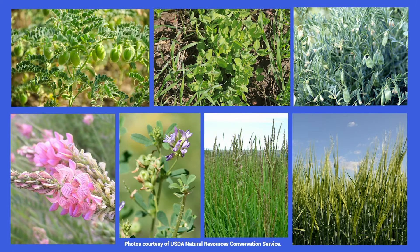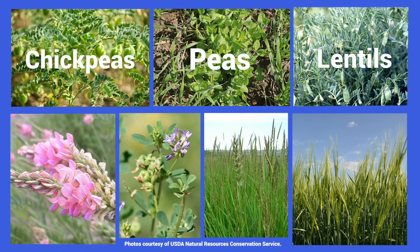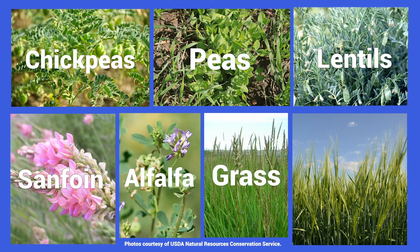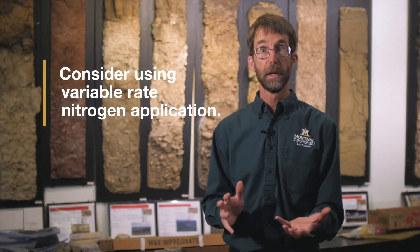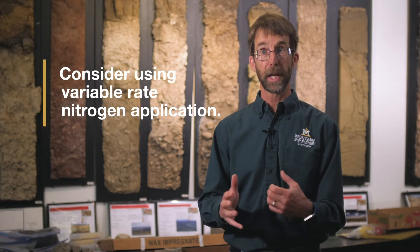Other ways to prevent soil acidity are to select crops that require less nitrogen. Those would include the pulse crops such as chickpeas, peas, and lentils. Also perennial crops such as sainfoin, alfalfa, or grass. Barley also uses substantially less nitrogen than the hard red wheats. Other ways to use nitrogen more efficiently would be to apply it only where it's needed most — a variable rate application rather than uniform application across the field.